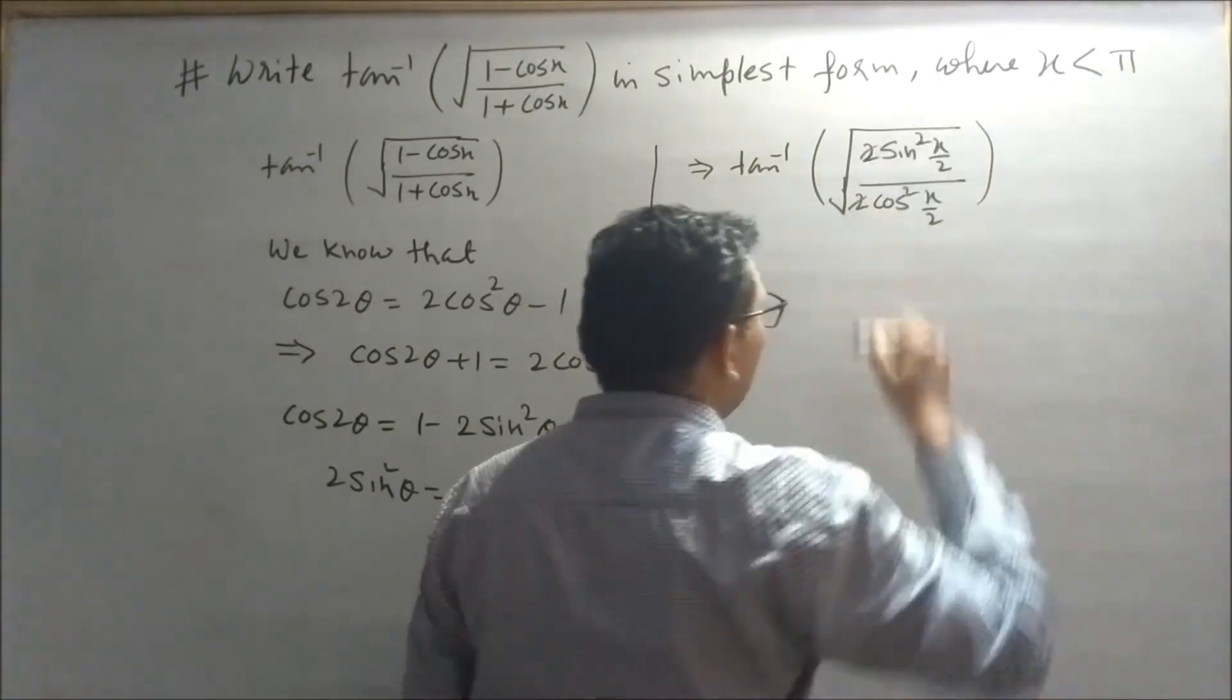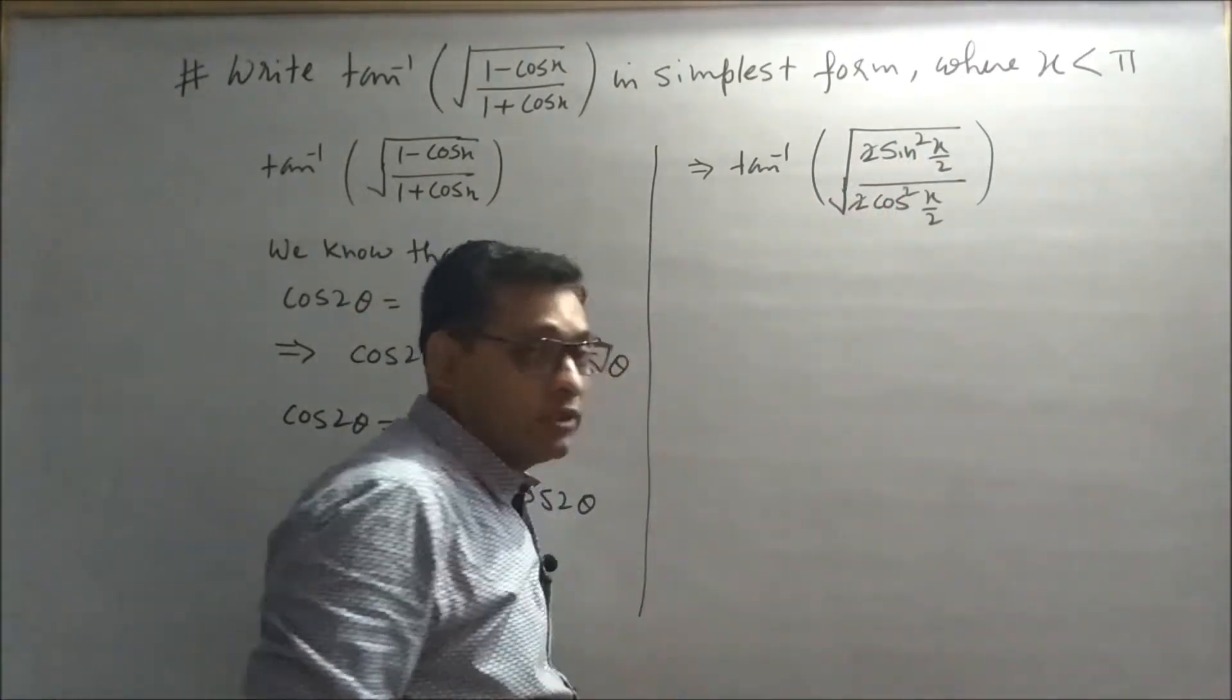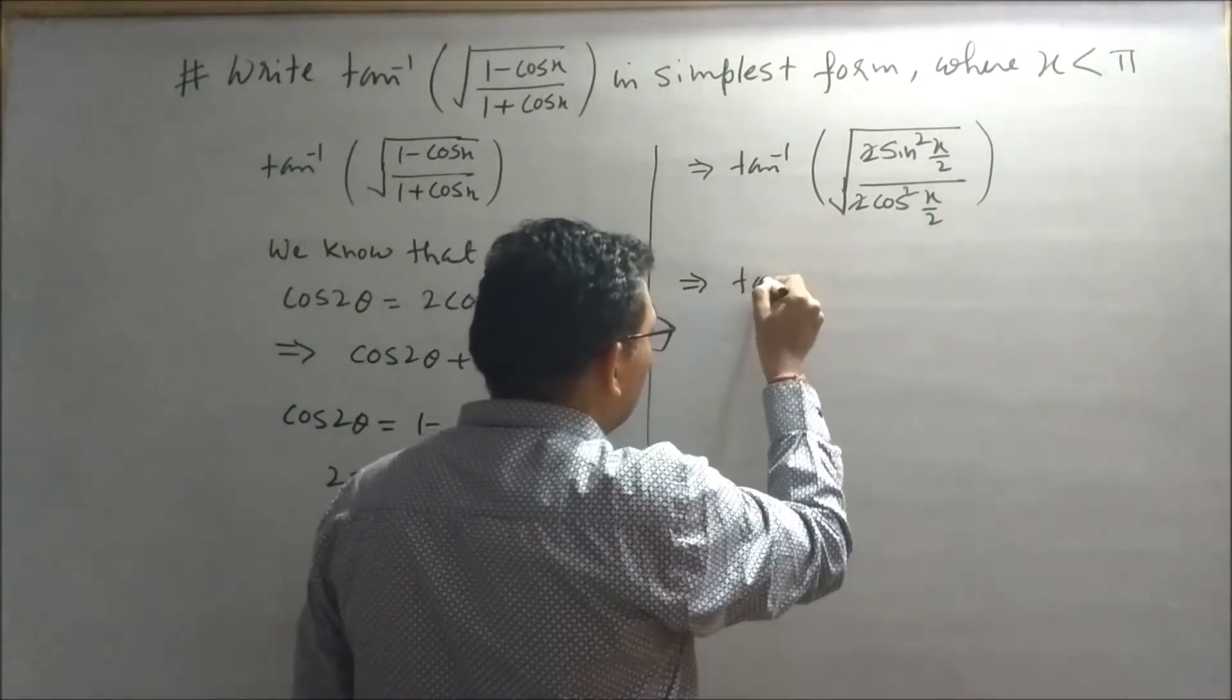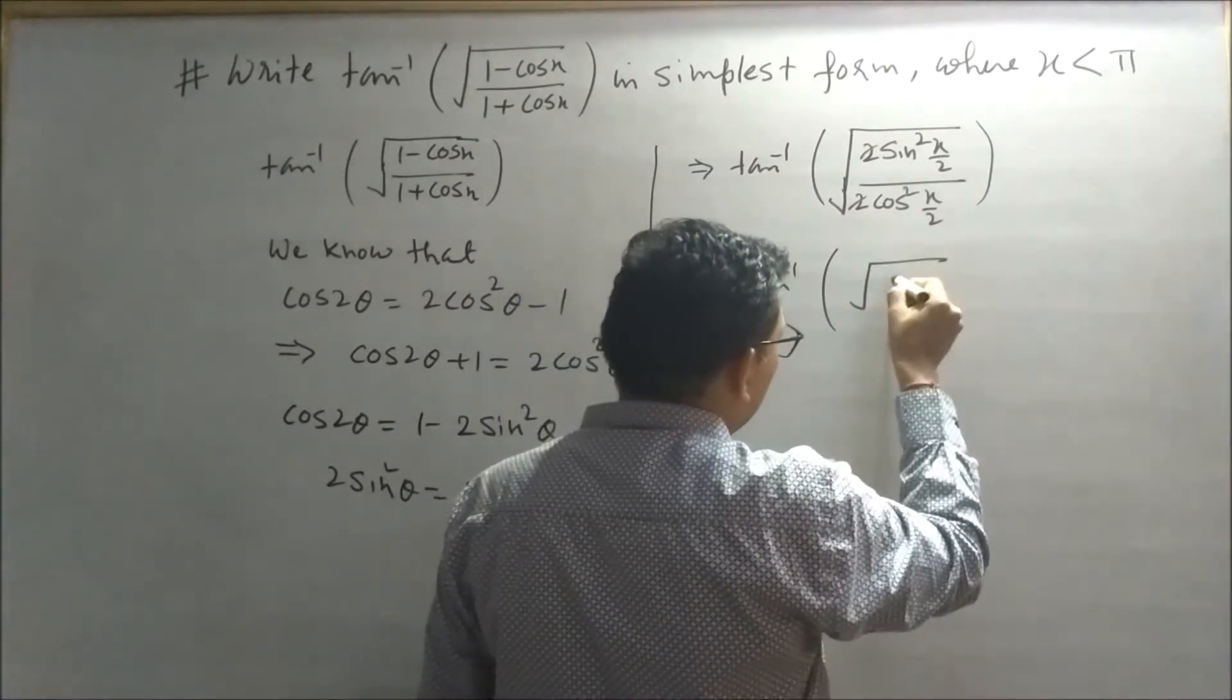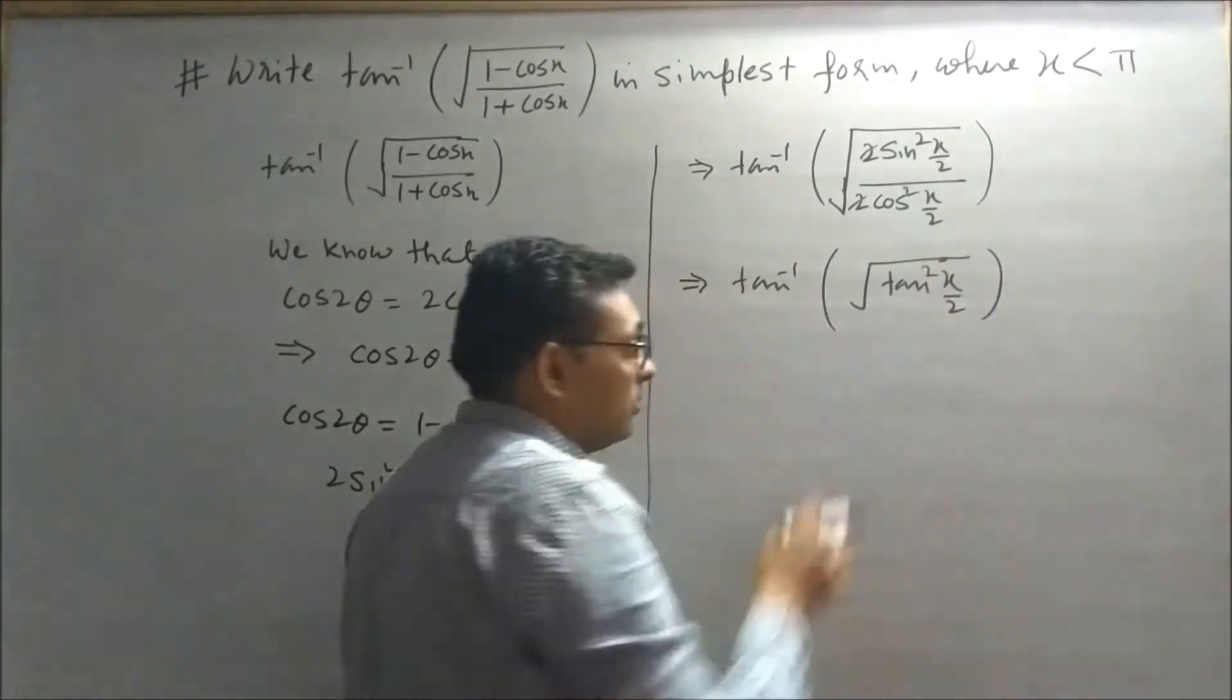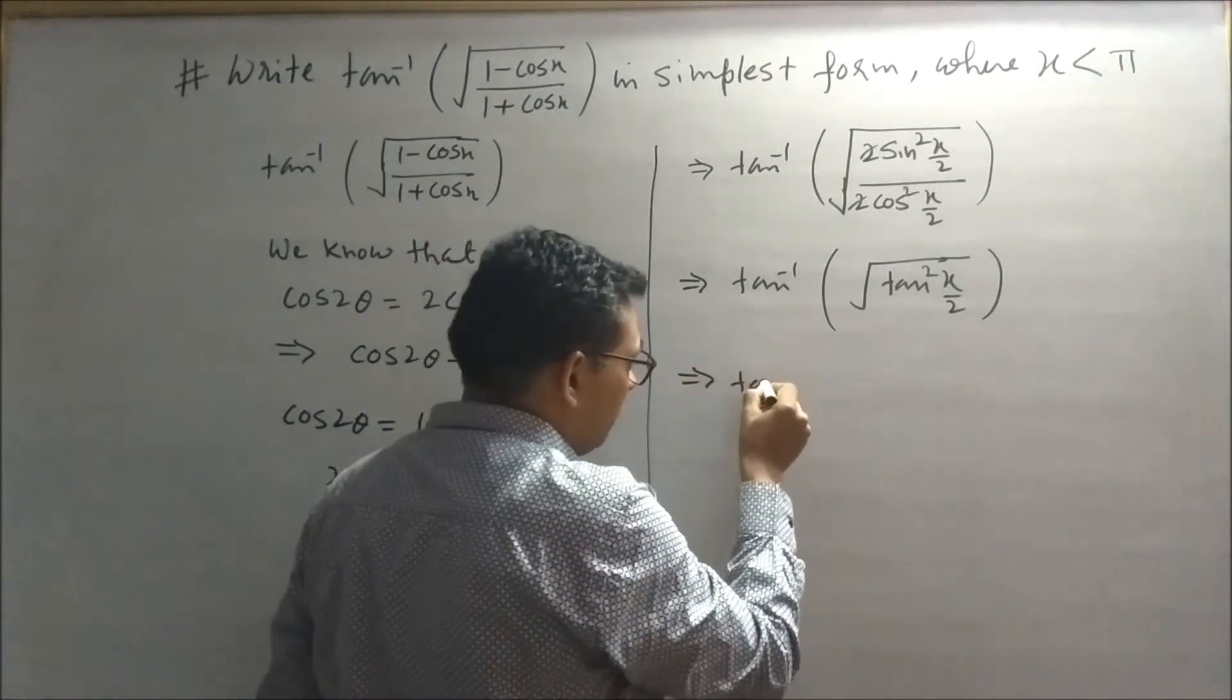2 and 2 will cancel out. Sin² (x/2) upon cos² (x/2) will give me tan² (x/2). Tan inverse under root tan² (x/2), square root will cancel with square, so this gives us tan inverse tan (x/2).